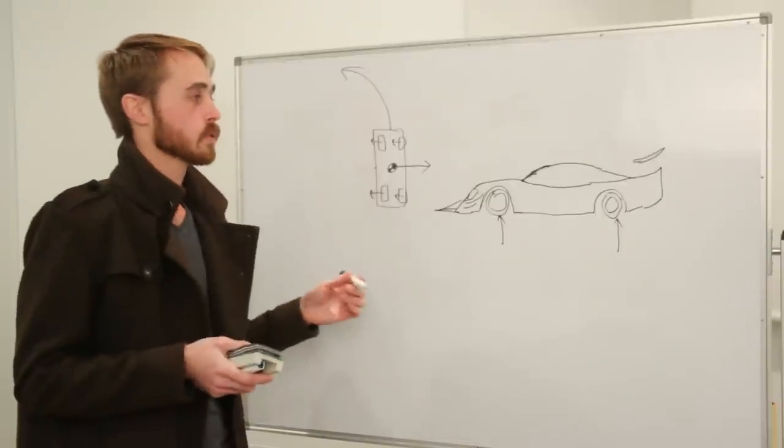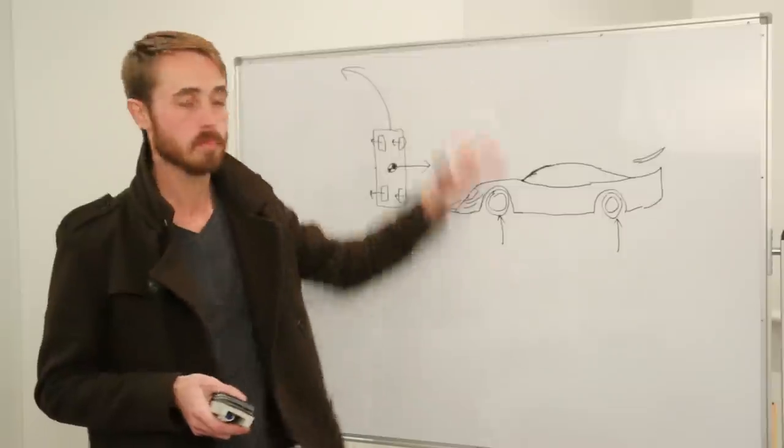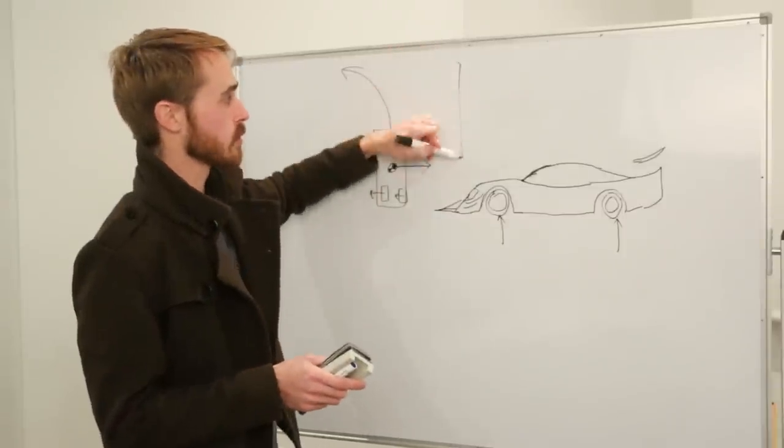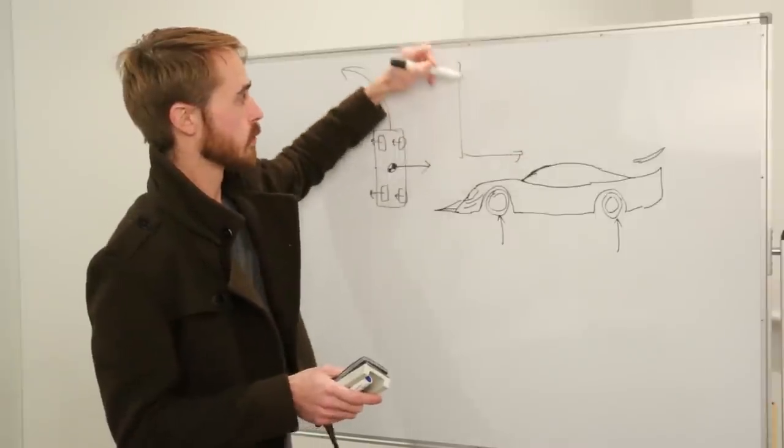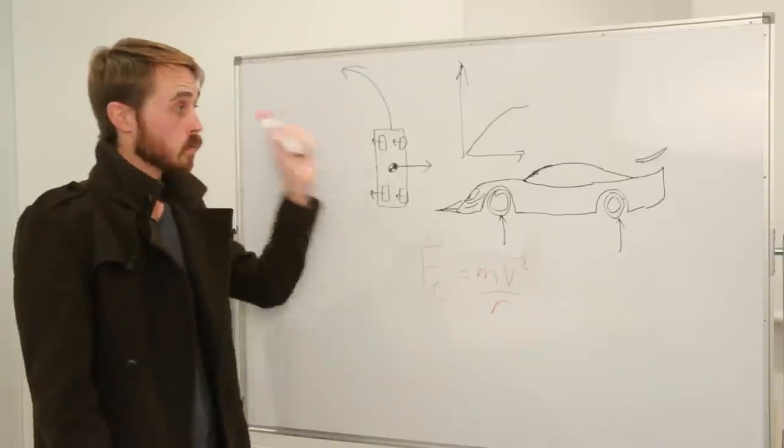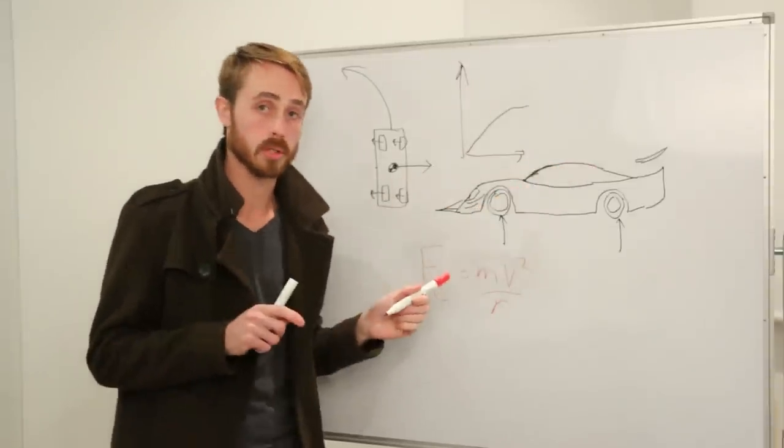So as far as downforce goes, the basic concept of downforce is you have aerodynamic force pushes down on your car. If you watch my video on tires you'll know that as the normal load on the tires increases, your grip increases. The gist of that is more downforce equals more G you can pull into a corner.